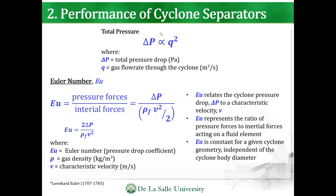For the formulas, the pressure drop is directly proportional to the square of the gas flow rate. We also have the Euler number, which is basically the pressure forces divided by the inertial forces — that's why you have pressure divided by inertia.